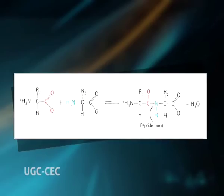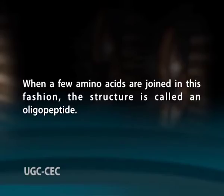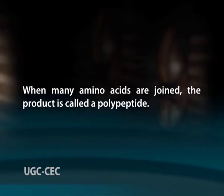Here we can find a schematic representation for the formation of a peptide bond. Three amino acids can be joined by two peptide bonds to form a tripeptide. Similarly, amino acids can be linked to form tetrapeptides, pentapeptides, and so forth. When a few amino acids are joined in this fashion, the structure is called an oligopeptide. When many amino acids are joined, the product is called a polypeptide.